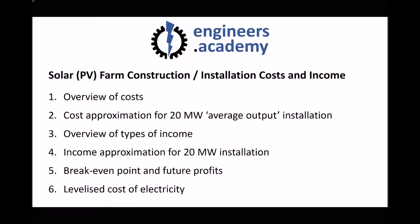In the previous video we looked at how we could approximate the construction and installation costs of a wind farm, and we also looked at how much income a given wind farm was likely to generate. In this tutorial we're going to repeat the process but for a solar photovoltaic farm. We'll look at an overview of the costs, a cost approximation for a 20 megawatt average output installation, recap the different types of income, discuss the break-even point, and finish by looking at the levelised cost of electricity, which takes operational costs into consideration.